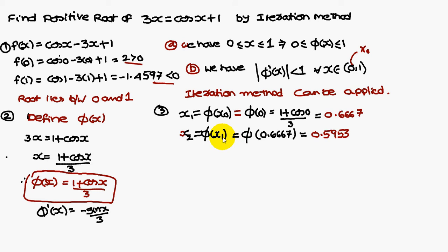x2 equals phi of x1, where x1 is 0.3667. Therefore, x2 equals phi of 0.3667, that is 0.5953. You have to substitute 0.3667 in the phi of x.